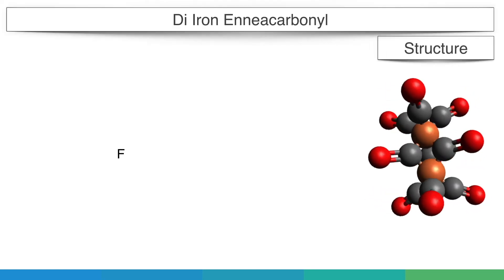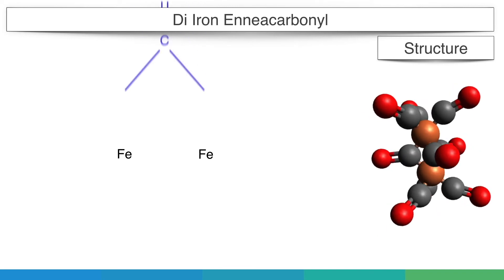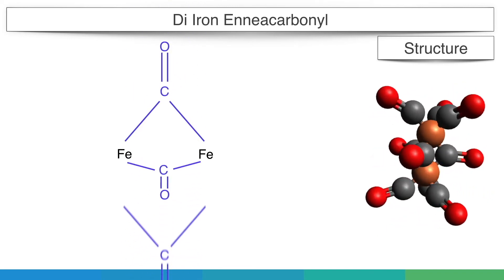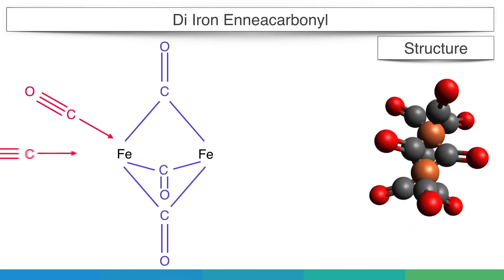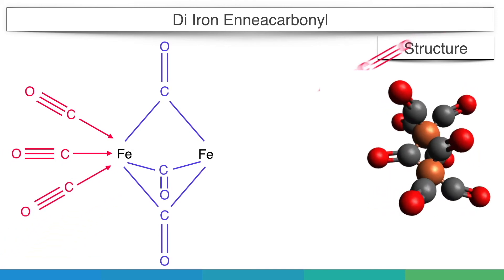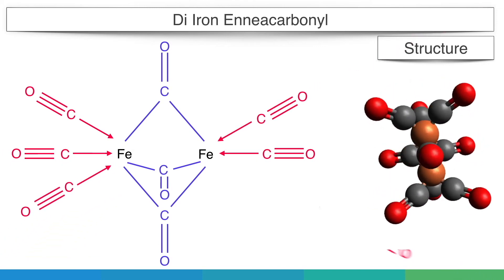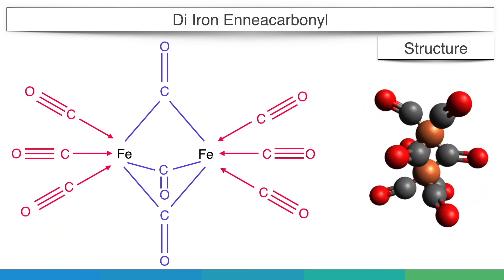Di-iron enneacarbonyl. Di-iron enneacarbonyl have two types of carbonyl groups: terminal carbonyl and bridge carbonyl group. In di-iron enneacarbonyl, in all there are six terminal and three bridge carbonyl groups.